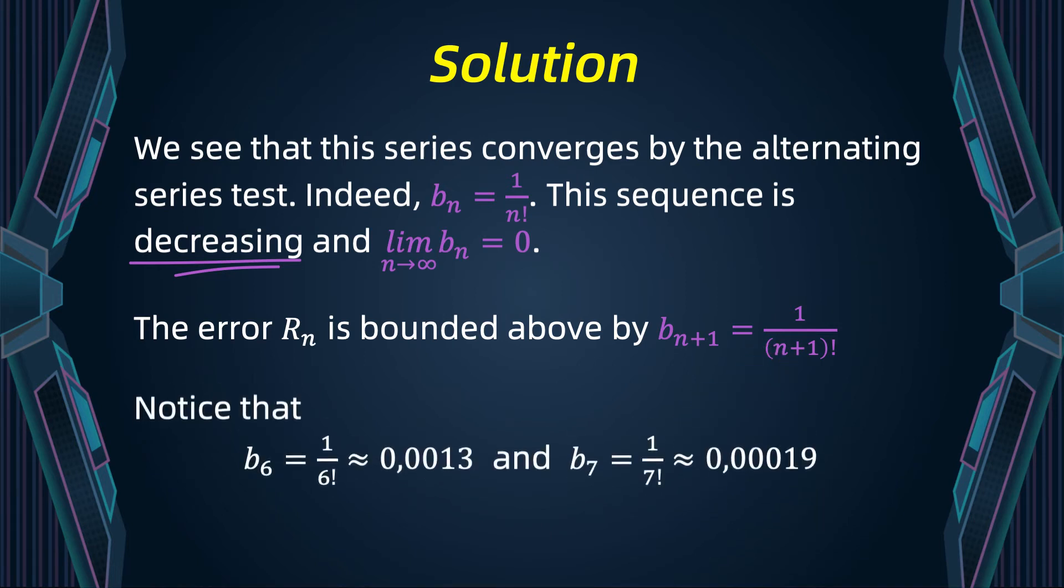Here we present you b6 and b7. b6 is one divided by six factorial, which is approximately 0.0013. b7 is one divided by seven factorial, which is approximately 0.00019. Notice that b7 works for our case, but not b6.